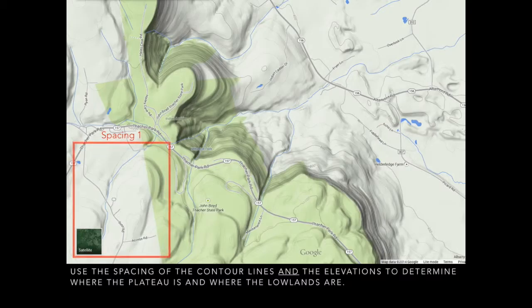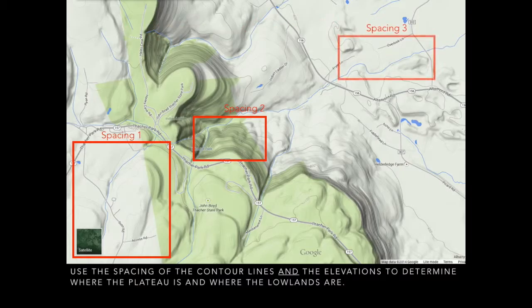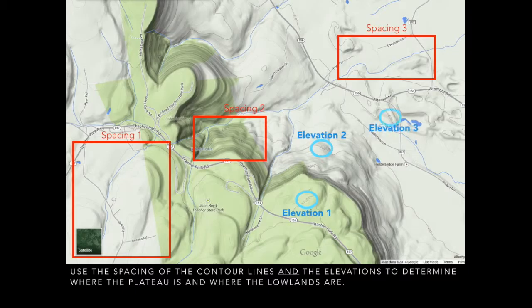So here's spacing one, here is spacing two, and here is spacing three. And we're going to have elevations to go along with those spacings. There's elevation one at 1200 feet, elevation two at 600 feet, and elevation three is 400 feet.